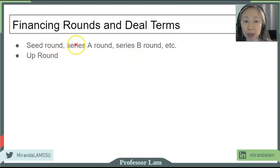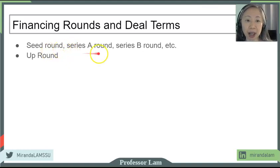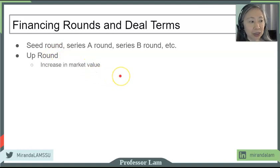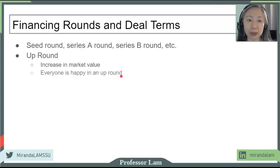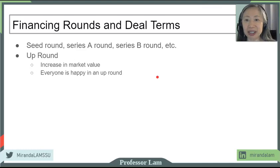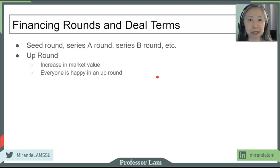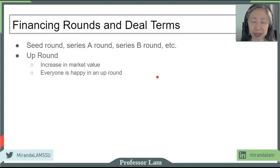The change between rounds is similar to a change in market value. If the market value went up between rounds, it's called an up round — that is an increase in market value. In an up round, when everything is going well, everybody is happy — from the entrepreneur to the existing investors to the new investors.